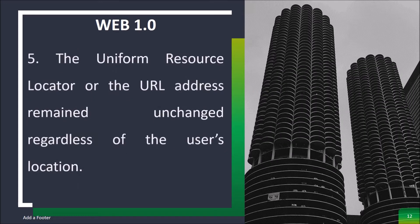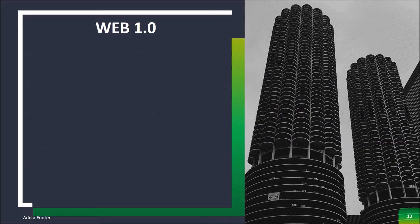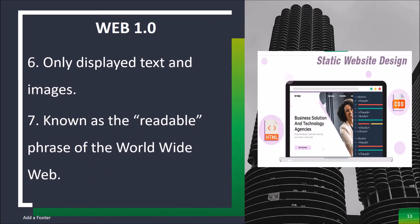The Uniform Resource Locator, or URL address, remained unchanged regardless of the user's location, and only displayed text and images — known as the readable phase of the World Wide Web.